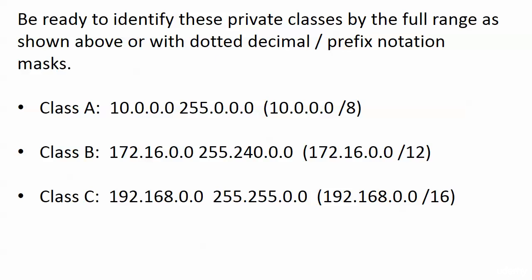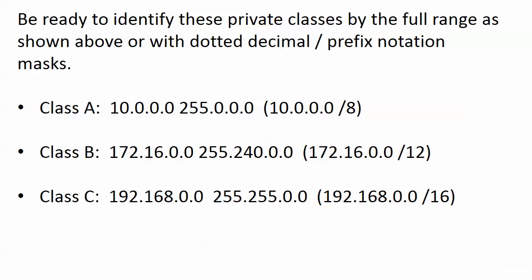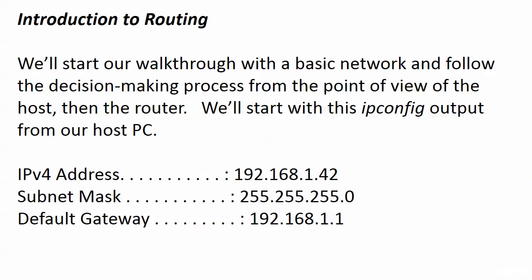When you see the same address range expressed three different ways, it can make your head swim a little bit. I want you to be comfortable with all three ways to express it — whether showing the first and last address in the private range, or expressing them with a dotted decimal or prefix notation mask. Introduction to routing is coming up next. We're going to start getting our hands on a Cisco router and do some walkthroughs to see what a router and a host do when there is a route to a destination, when there is no route, and how to remedy that.